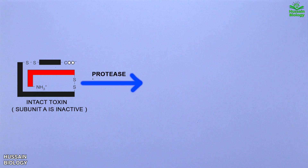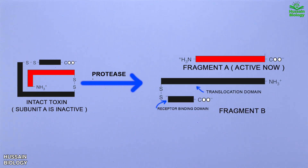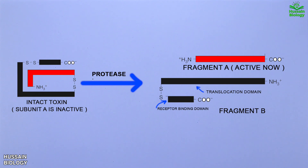Within the host cell, proteolytic cleavage of the intact toxin and reduction of disulfide bonds yields two polypeptide fragments. The first fragment, shown in red, is subunit A, which shows ribosylating enzymatic activity that blocks protein synthesis. Subunit A only gets activated once it is cleaved off from the polypeptide structure. Subunit B is made from two fragments: one for receptor binding and one for translocation.